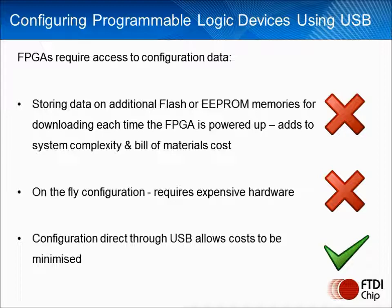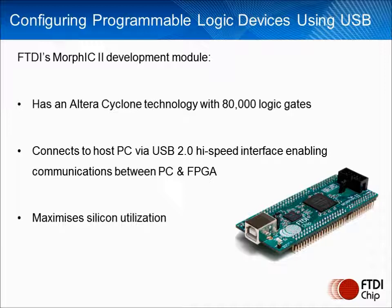The Morphic2 development module from FTDI is targeted at system designs where hardware reconfiguration via USB is required. This low cost module uses an Altera Cyclone 2 device and has 80,000 logic gates. The module connects to the host PC via a USB 2.0 high speed interface. Through this it is possible to create a communications bridge between the PC and the FPGA. This bridge is split into two channels: a programmable interface channel and an 8-bit parallel FIFO interface channel.